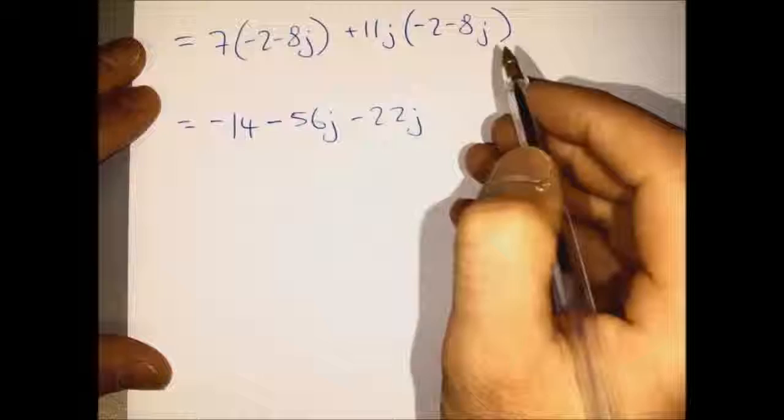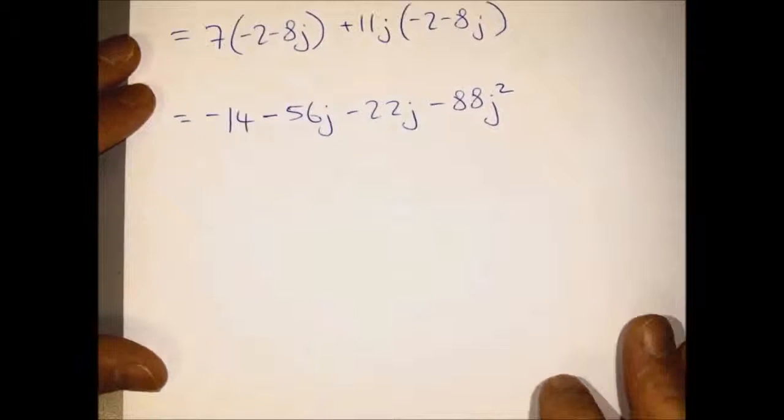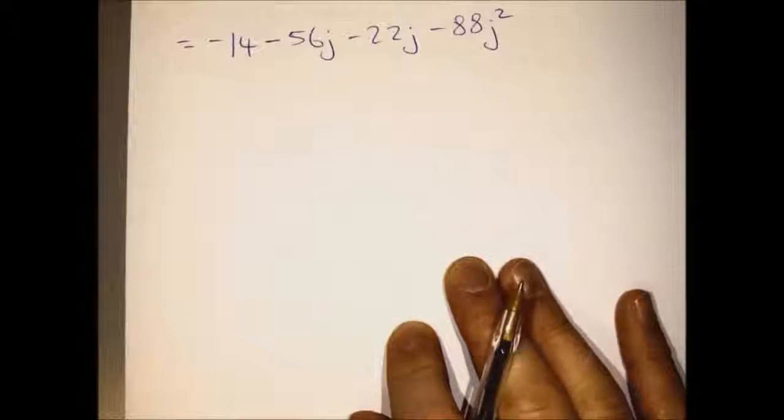That will give us minus 14, minus 56J, minus 22J, and minus 88J squared.